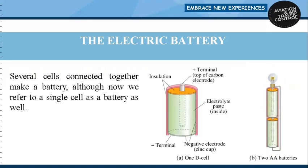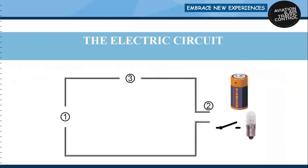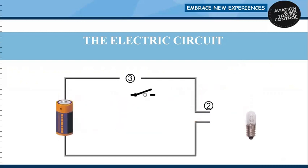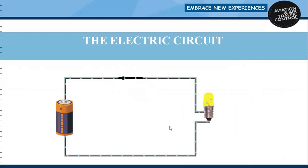Several cells connected together make a battery, although now we refer to a single cell as a battery as well. An electric circuit is a closed path through which electric current flows. A simple electric circuit contains a source, battery, a switch, a load, and a conductor.